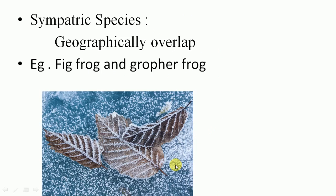Next is sympatric species. What is sympatric species? Sympatric species develop due to geographical overlap. A picture shows two leaves overlapping each other — similarly, in nature, geographical areas overlap. The pig frog and the gopher frog are examples of sympatric species because they are geographically mixed with each other, yet exist as two parallel species.